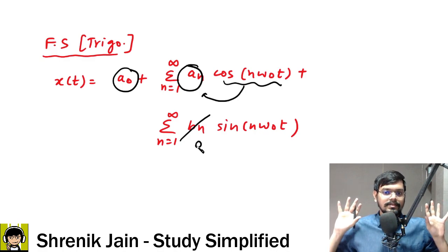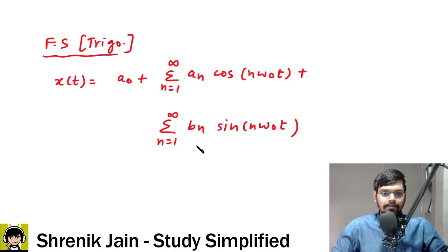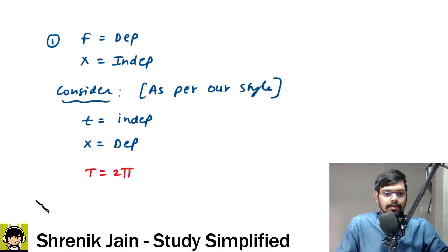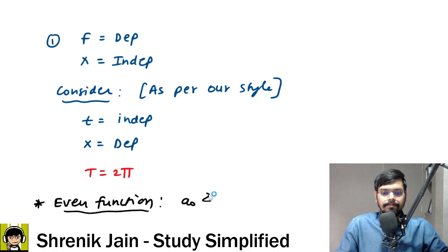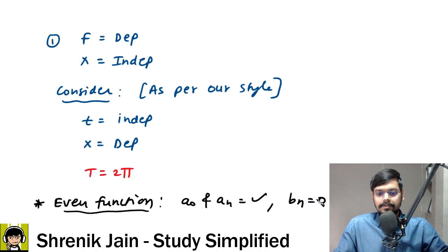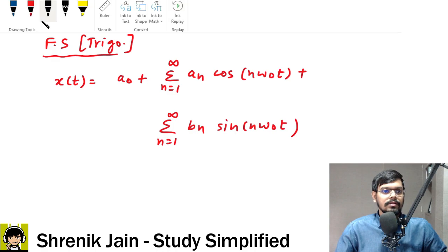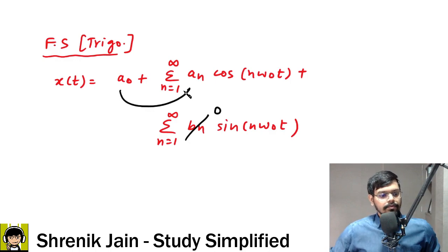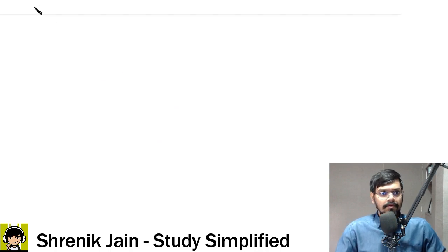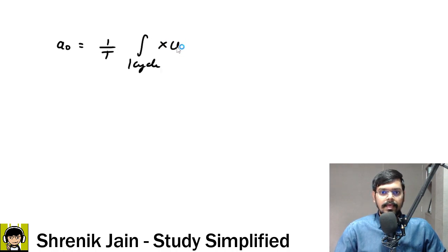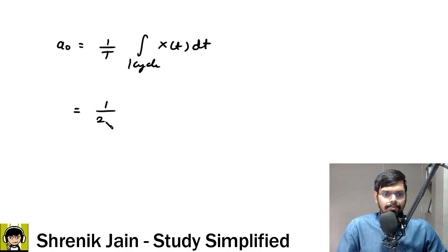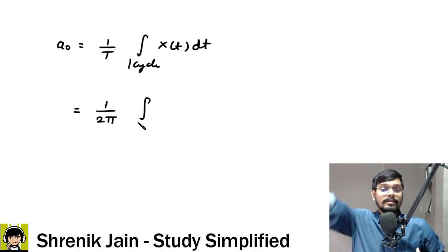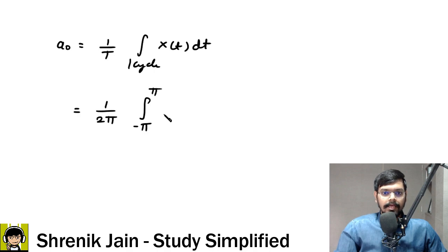Since we have an even function, we only need to find two terms: A_naught and A_n. B_n is surely zero, so that part of the series is gone. To find A_naught, we use the formula: one over T, integral over one cycle of x(t) dt. The fundamental time period T is 2 pi, and the graph works from minus pi to pi, so the integration is from minus pi to pi.